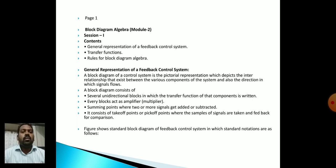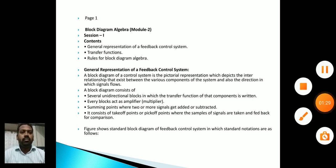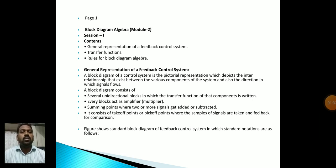A block diagram of a control system is the pictorial representation which depicts the inter-relationship that exists between the various components of the system and also the direction in which the signal flows. The block diagram consists of several unidirectional blocks in which the transfer function of that component is written. Every block acts as an amplifier or multiplier. It also includes summing points where two or more signals get added and subtracted, and takeoff points (also called pickoff points) where samples of signals are taken and fed back for comparison.